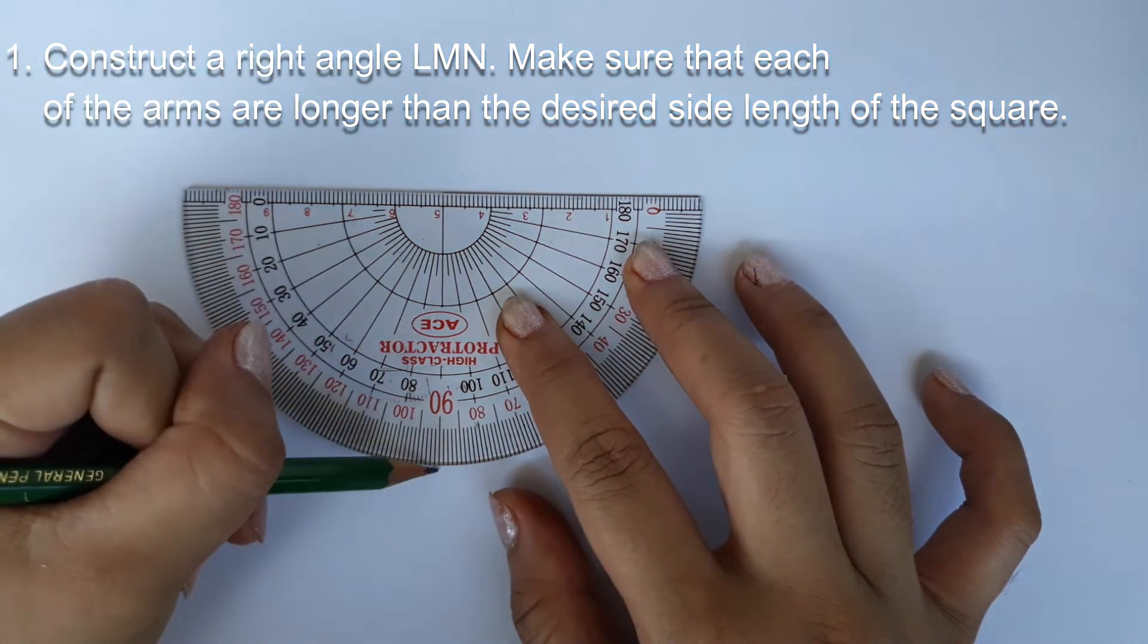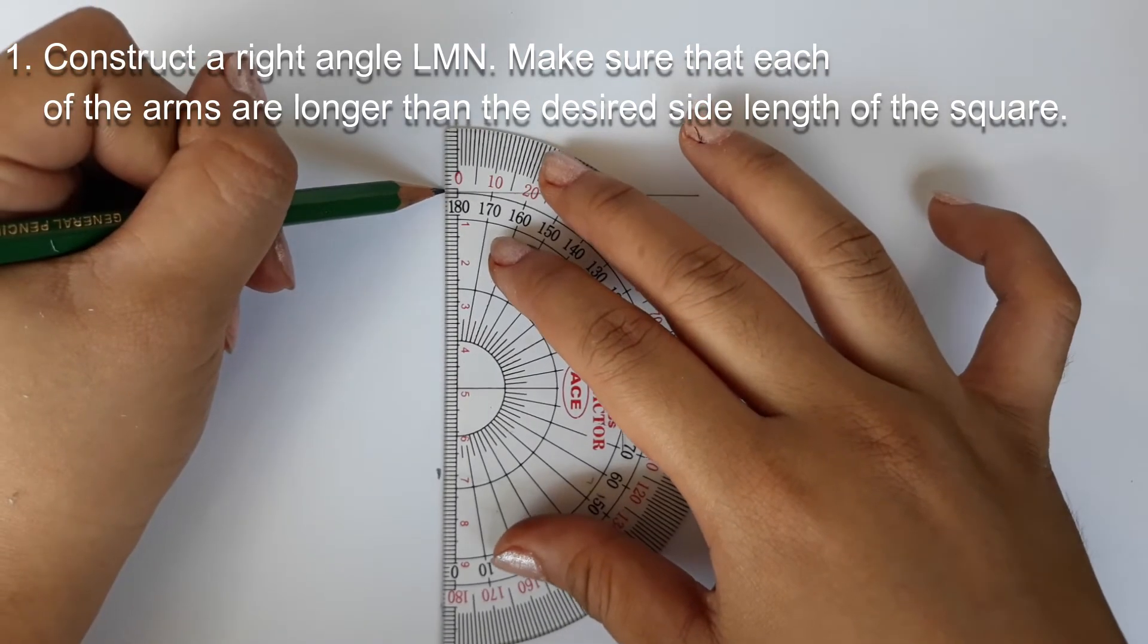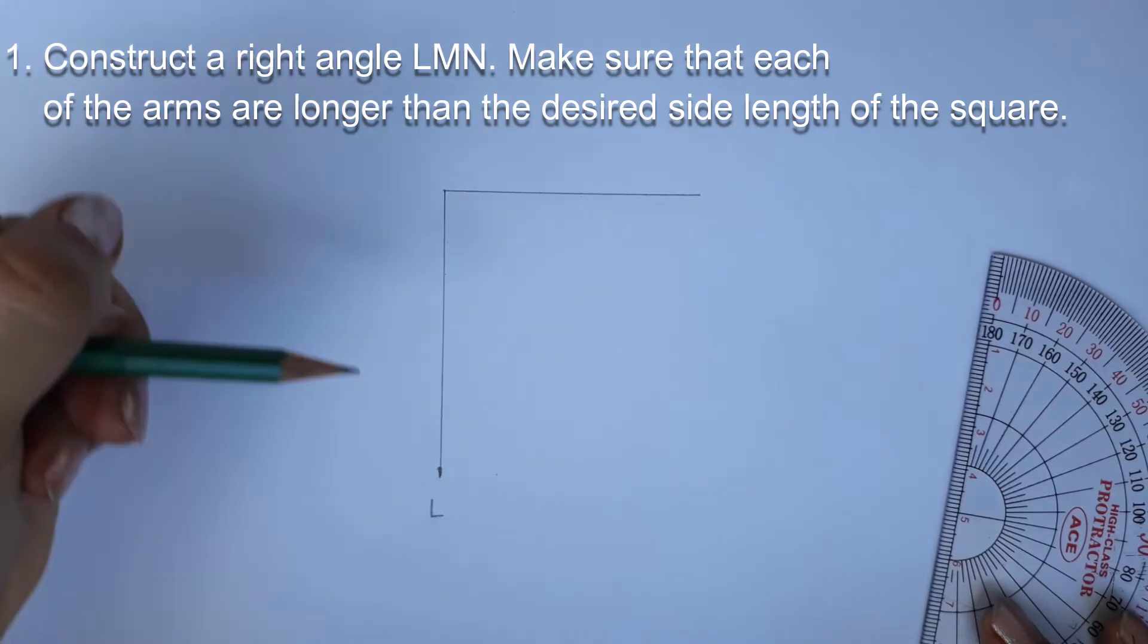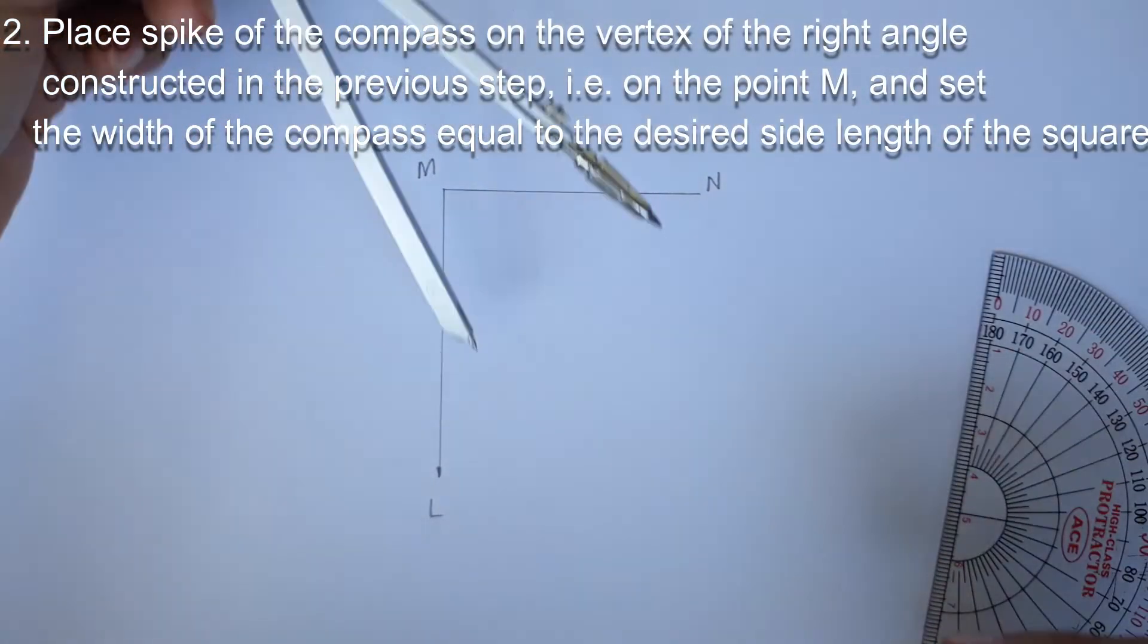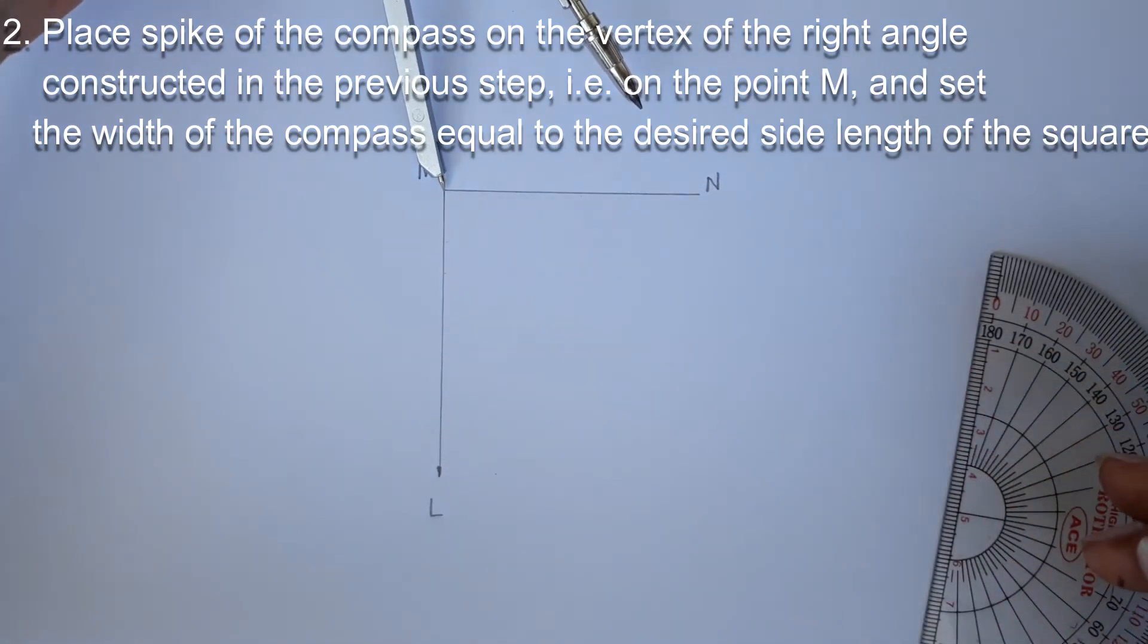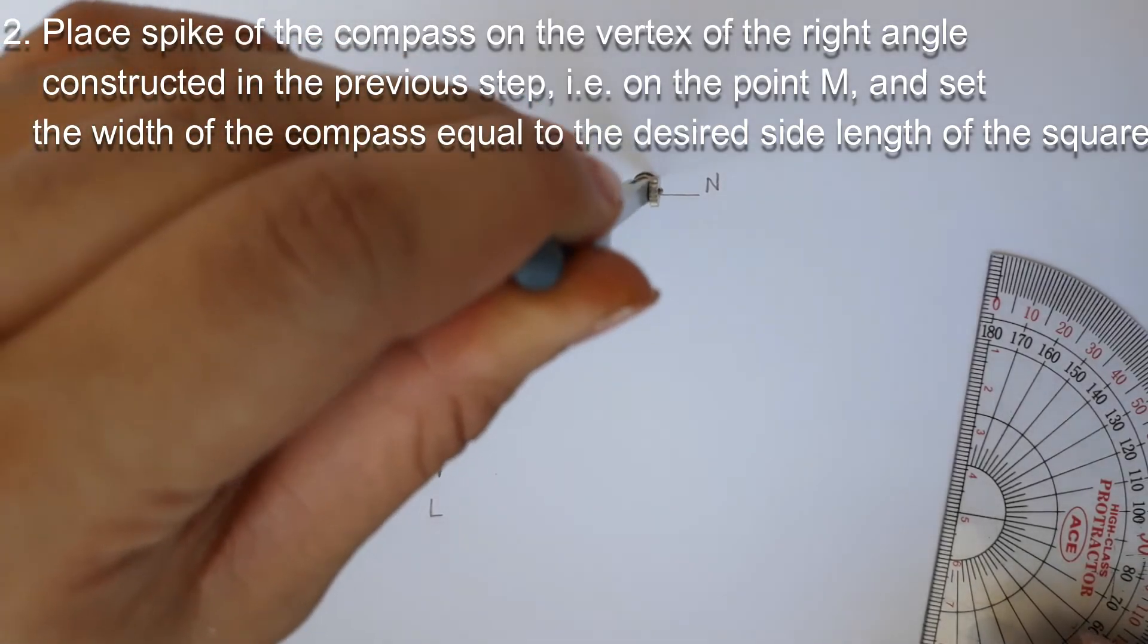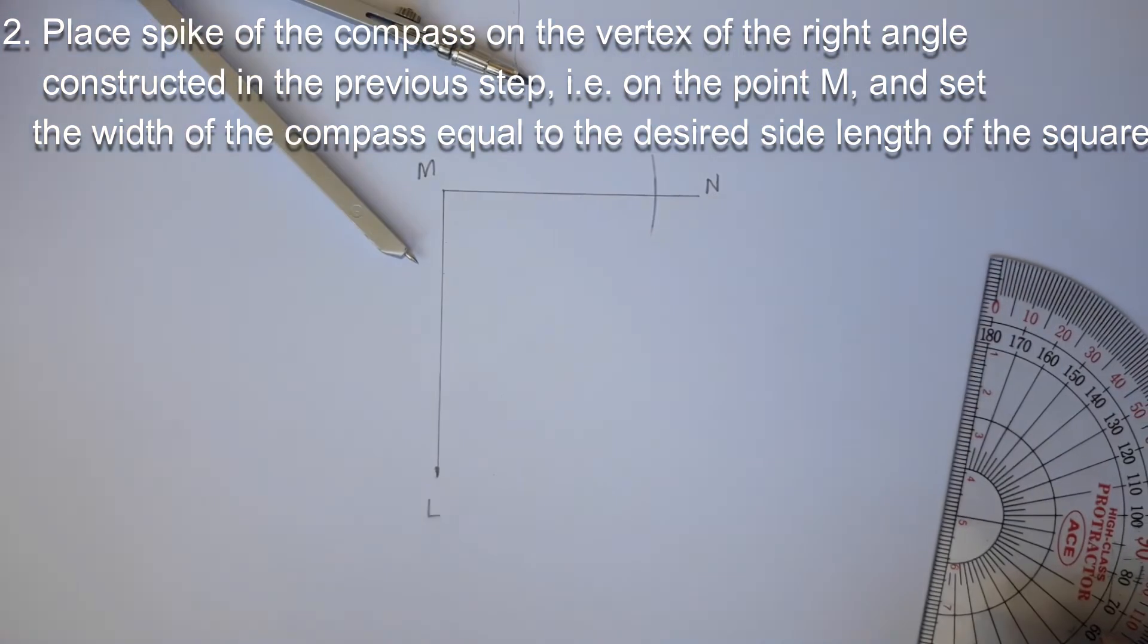Step 1. Construct a right angle. Let's name it angle LMN as described here. Make sure that each of the arms are longer than the desired side length of the square. Step 2. Place spike of the compass on the vertex of the right angle constructed in the previous step, example on the point M, and set the width of the compass equal to the desired side length of the square. This set width remains unchanged until the entire construction is completed.